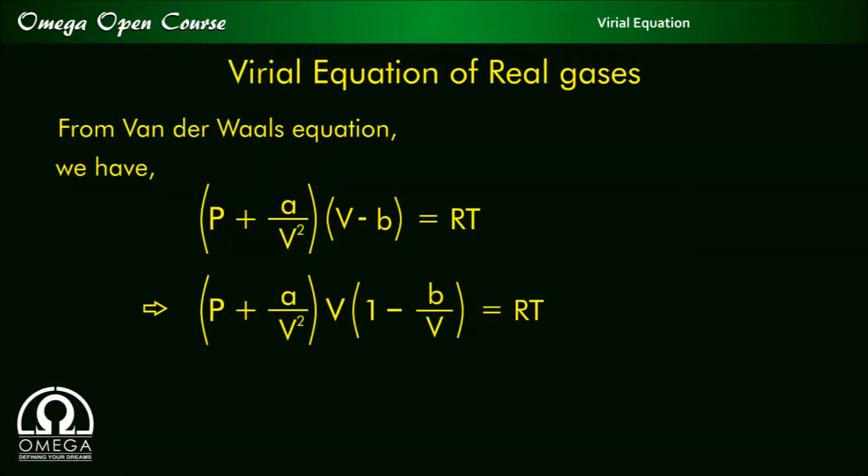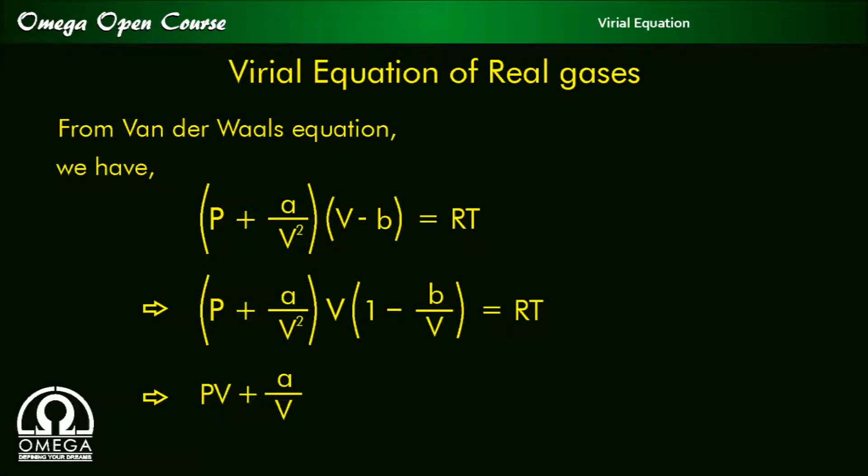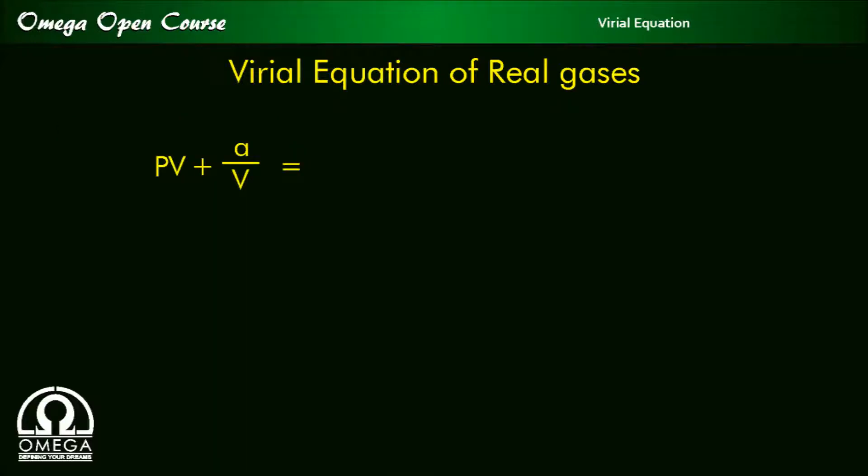is equal to RT, or p plus a by v square is equal to RT by 1 minus b by v to the power minus 1.